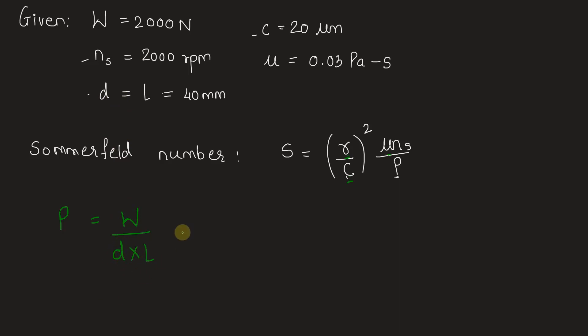millimeters times 40 millimeters. What we get is in Newton per millimeter squared, that is mega Pascal. We have 2000 divided by 1600, which is 1.25 mega Pascal. Now P is in mega Pascal, so μ should be in mega